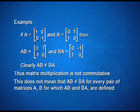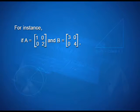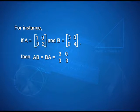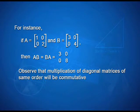This does not mean that AB is never equal to BA for every pair of matrices A and B for which the products are defined. For instance, if A equals [1, 0; 0, 2] and B equals [3, 0; 0, 4], then product AB equals [3, 0; 0, 8]. Observe that multiplication of diagonal matrices of the same order will be commutative.